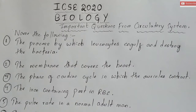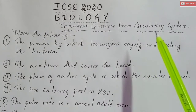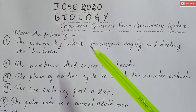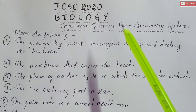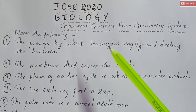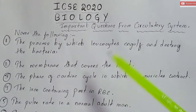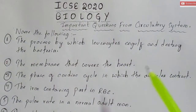Hi guys, this is Barsha in your Chain Mastermind. In this session we are going to discuss the important questions from the circulatory system — that is, 'name the following' type of questions which are mostly asked from this chapter. These are important for your ICSE 2020 board examinations and it is also going to be a kind of revision for you all. If you want the PDF of this, you are going to get it in the description box of this video.